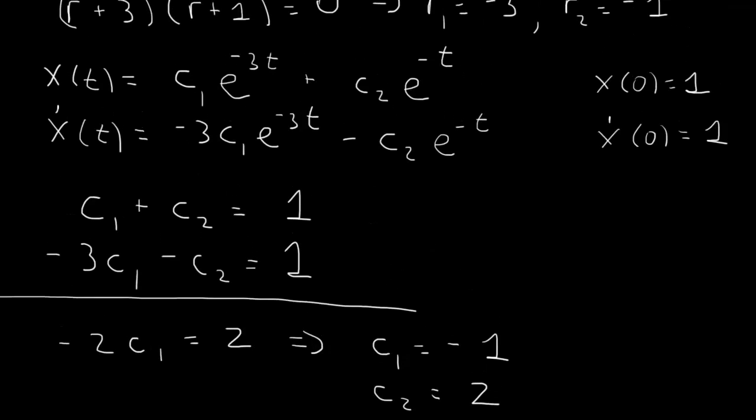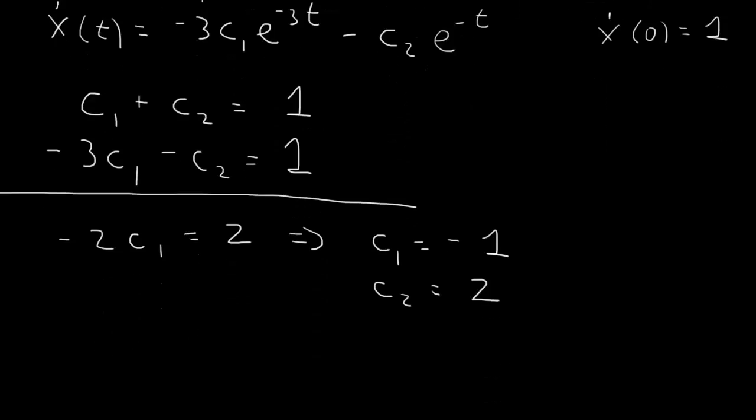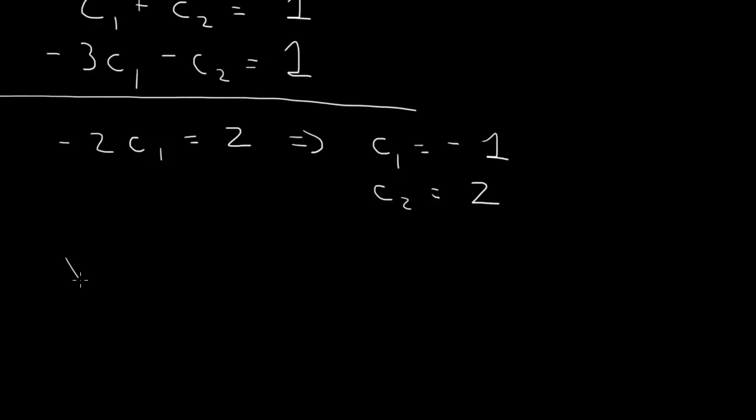So that gives us c1 and c2. x of t is c1 times e to the minus 3t plus c2 times e to the minus t. We just write down x of t equals minus e to the minus 3t plus 2 times e to the minus t.